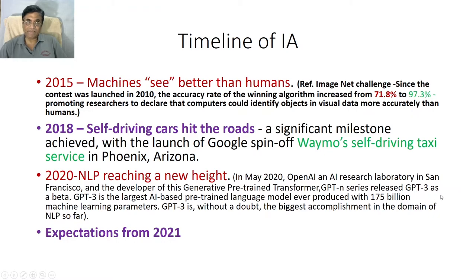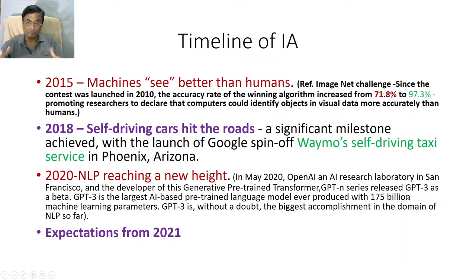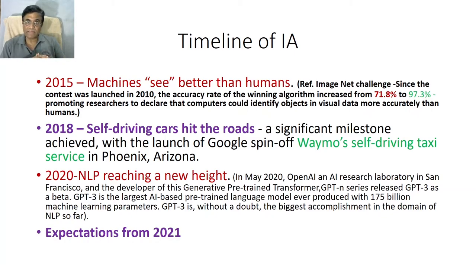So in 2020, GPT-3 emerged as the largest AI-based pre-trained language model, which could process 175 billion parameters during learning. So many parameters in a gigantic neural network were deployed to learn natural language processing with great success. It's the biggest accomplishment in the domain of natural language processing so far, and this can take our technology to a new height.